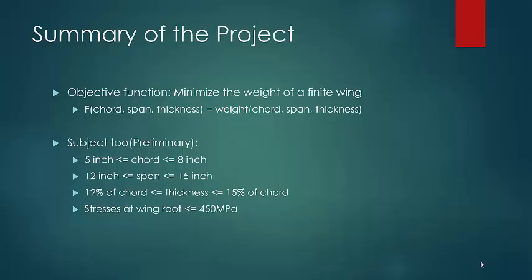This will be subject to the following preliminary constraints: a chord between 5 to 8 inches, a span of 12 to 15 inches, a thickness of 12% to 15% of chord, and the wing must sustain stresses no greater than or equal to 450 MPa.